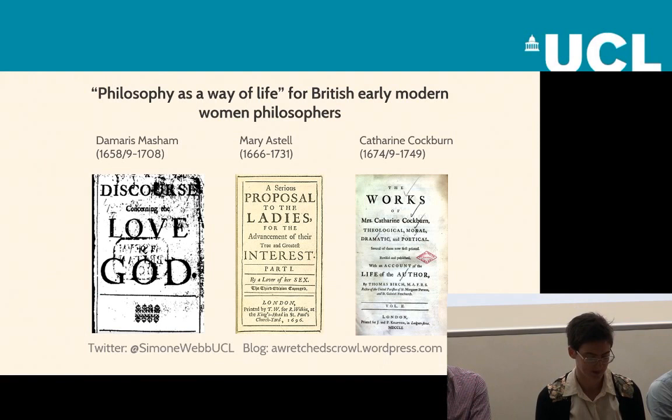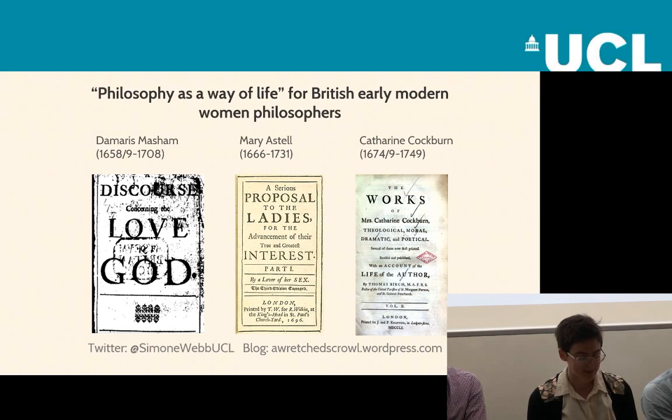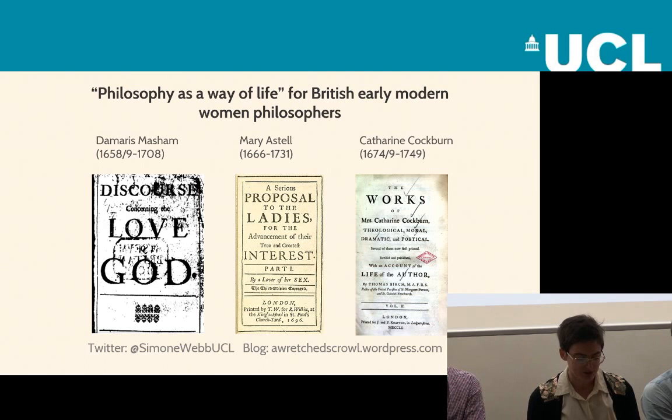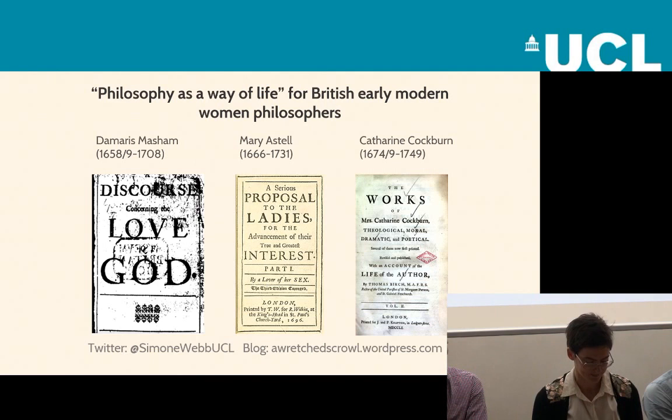They did it in ways which really tie into their gender and their lives as early modern women. In opposition to the calm reasoning of her published work, Damaris Masham undergoes a turbulent process of philosophical self-creation in her very intimate letters to the famous philosopher John Locke. Astell, in her most famous book A Serious Proposal to the Ladies, sets out a programme of life and philosophy that can free women from the oppressive customs of early modern British society. Coburn writes letters to her niece in which she acts as a philosophical guide — almost a Socratic figure — a rare relationship defined between two women in the period. For all three women, philosophical activity goes beyond philosophical arguments published in books.